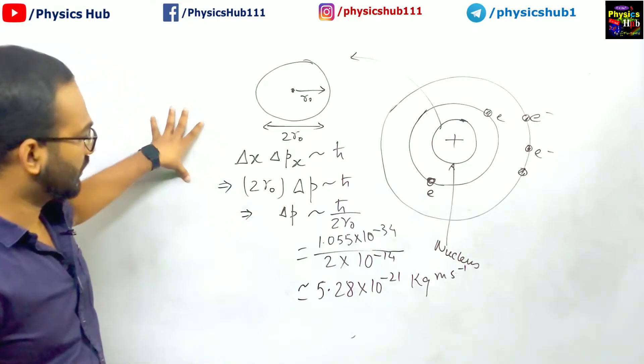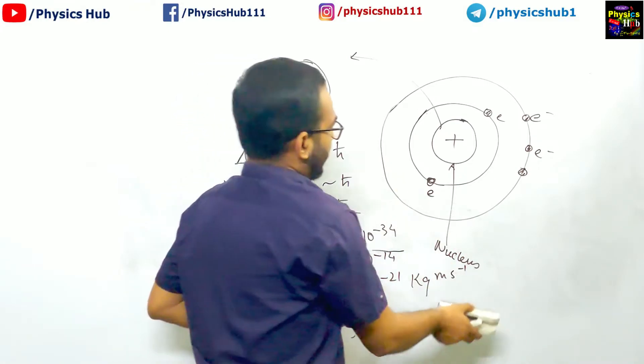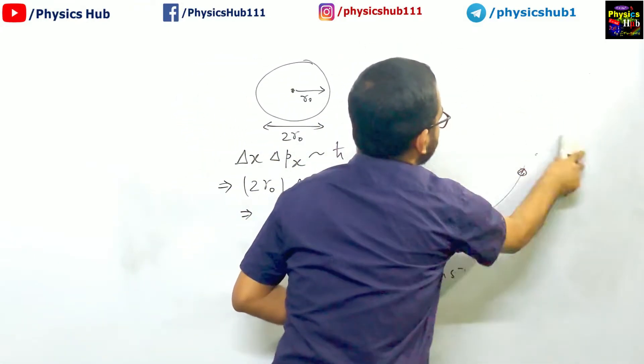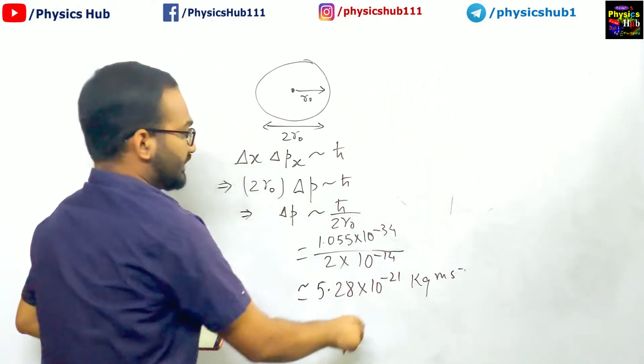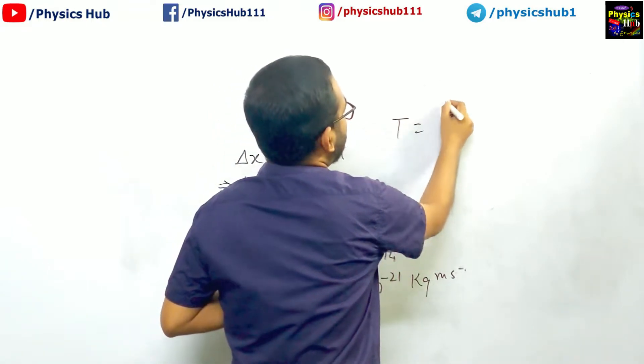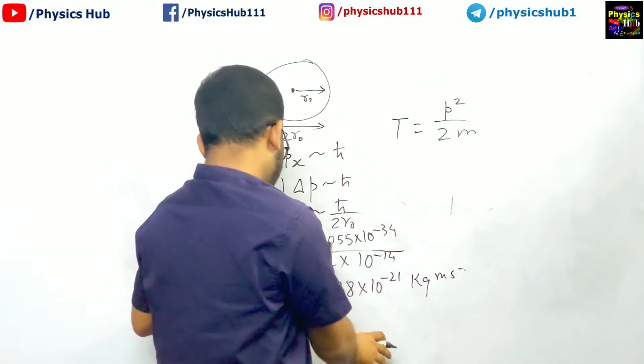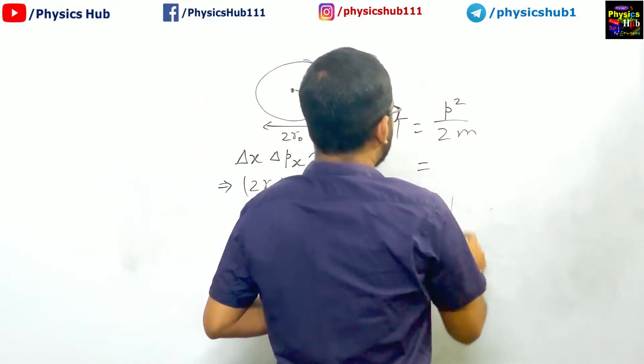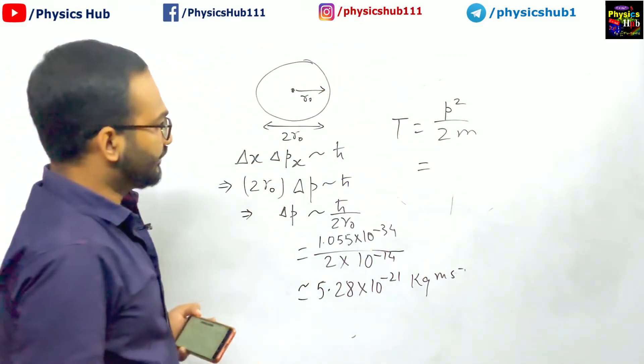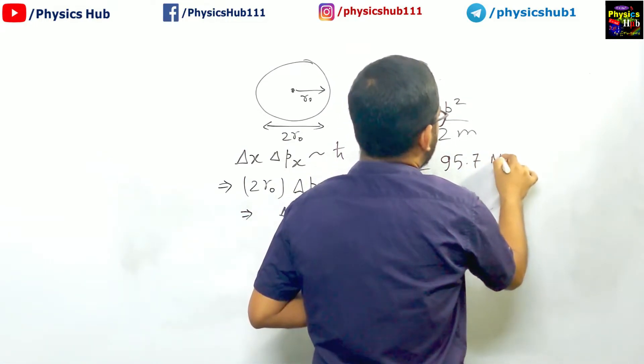So this is the amount of momentum we are getting. Now from this we can get the idea about the energy. So if p is this, then what will be the kinetic energy? Let us say T. T you know is p square by 2m. Square of this, so if you put the value of p square and 2 into m, mass of the electron, then what you are going to get?